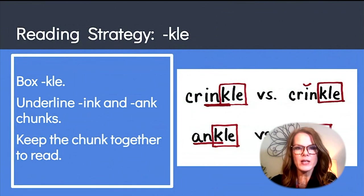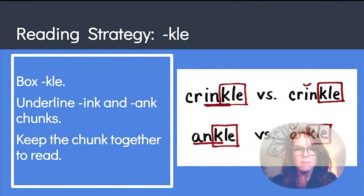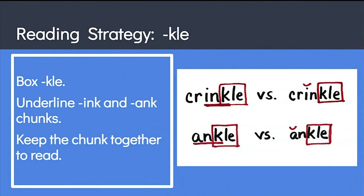Now there are a couple of additional strategies for reading words with KLE and CKLE patterns that are important in helping the students read the words correctly. Almost all words with KLE patterns have INK and ANK before it, and we know from tapping the first chart that INK and ANK stay together as one chunk and make one sound. We can help students identify the INK and ANK chunks to keep together when reading these words. So for the words crinkle and ankle, box the KLE, underline the INK and ANK, and keep the chunks together to read the word.